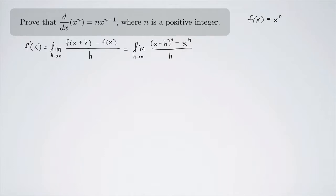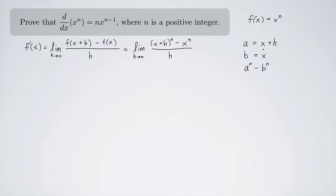The numerator here is the thing we're going to have to deal with. To figure out what to do with that, let's take a little detour. I'm going to let a equal x plus h, so I don't have to keep writing x plus h over and over again, and I'm going to let b be x. So this really looks like a to the n minus b to the n.